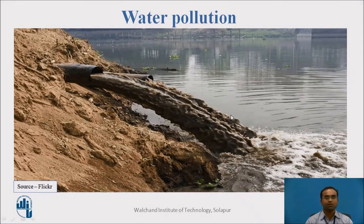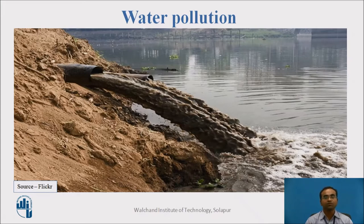Let us talk about the water pollution occurring in the stream — mostly the domestic sewage and industrial wastewater which is coming into the stream. The stream can be a river, a connecting canal, or whatever is the main connection between the city or village to the wastewater treatment plant. This connection also helps in the collection of water for purification and sending it back to the city after treatment.